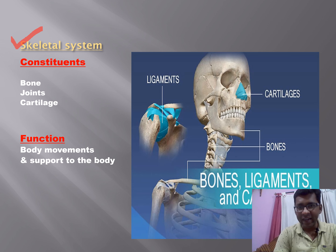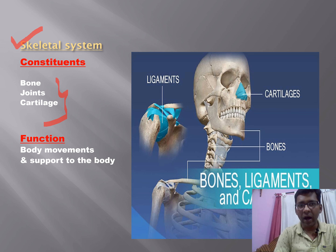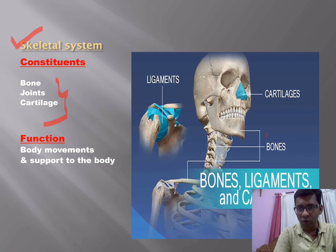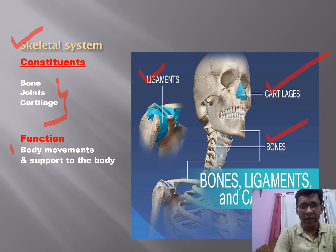The second system is the skeletal system. From the name, we understand that bones, joints, and cartilages are its constituents. The nose is mainly made up of cartilage, and ligaments are found in the joints. The skeletal system helps body movements and provides support to the body.